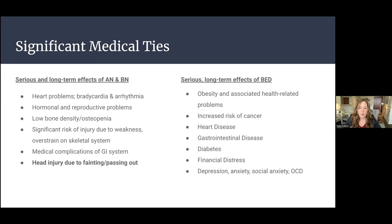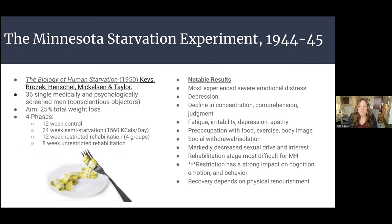Obesity and the associated health-related problems, risks of cancer, heart disease — you can see these here. There's also a level of financial distress caused by binge eating that we don't see with other disorders, because there is a lack of control over spending on food and overeating. This causes distress in relationships as well. Both have a high co-occurrence of other mental health disorders. Anxiety, depression, and OCD are among the highest. What I really want to talk about is what we know about the effect of starvation and malnutrition on the brain.